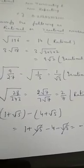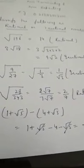Next example, 1 plus root 5 minus 4 plus root 5. So, 1 plus root 5 when open the bracket, it will become minus 4 minus root 5 plus root 5 minus root 5 cancelled and 1 minus 4 is minus 3 that is again rational.